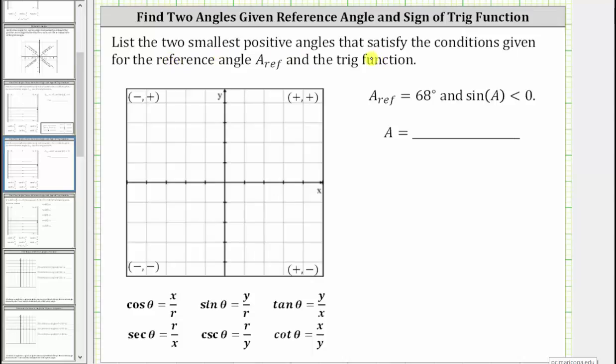List the two smallest positive angles that satisfy the conditions given for the reference angle A and the trig function. We're told the reference angle for angle A equals 68 degrees and sine A is less than zero.